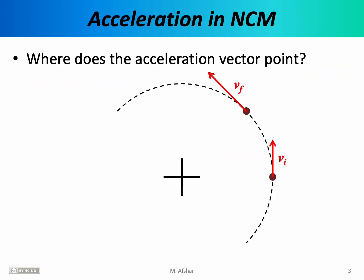It's useful to understand why the acceleration vector points inward in the case of circular motion. To calculate the acceleration vector we need the velocity vector at two moments in time. Recall that the average acceleration vector is defined as the change in velocity with respect to change in time, so we need to know the velocity vector at two moments in time and calculate their difference.